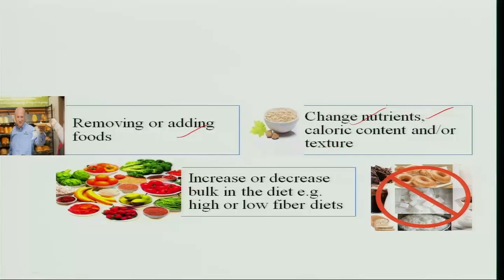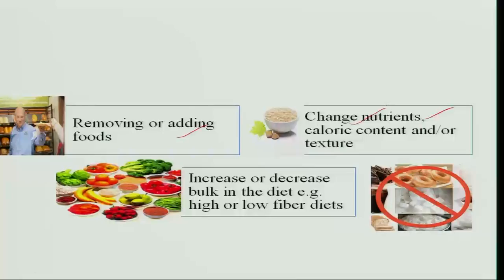For an obese person, a low-calorie diet is given, but other nutrients — protein, vitamins, and minerals — are maintained at the same level so the person does not go into deficiency of other nutrients; only energy is reduced. For a person with anemia, foods rich in iron are given in addition to the normal diet so that iron status in the blood increases, supplementing iron supplements for faster recovery. Similarly, based on the condition, the diet is kept changing.